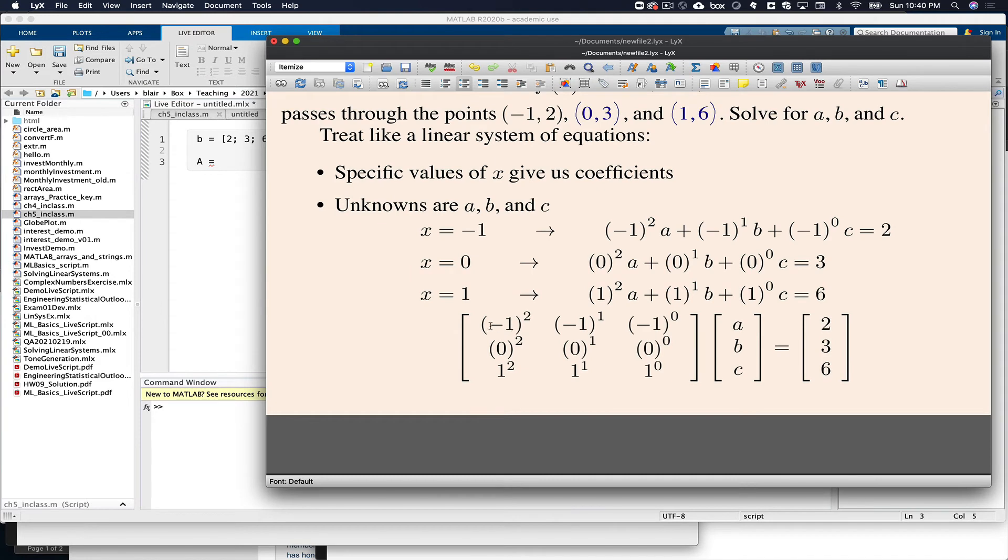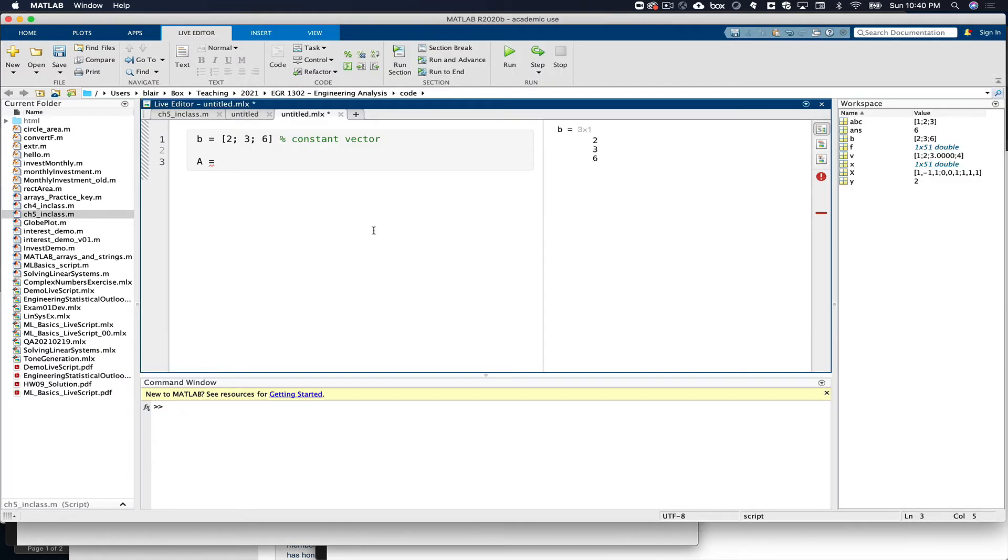And then our A matrix. Well, our first x value is negative 1, and so I can raise it to the powers 2, 1, 0 as follows. Dot power. And then a vector starting at 2, counting down by 1s, and then ending at 0.